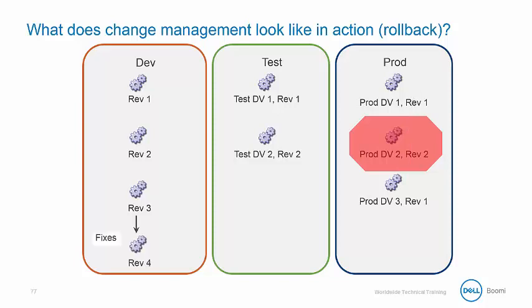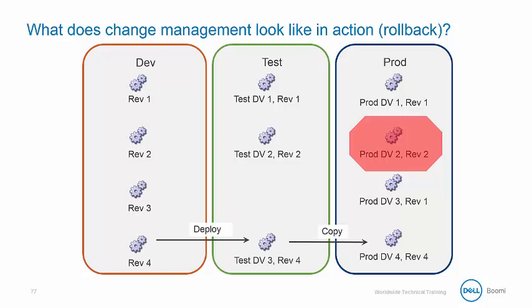We correct the production bug as part of revision 4. Once changes are applied, we can deploy it to our test environment using revision 4, and then promote it to production deployment version 4 using revision 4. You can see that the process versions skip around a bit when there is an issue and we need to perform a rollback.